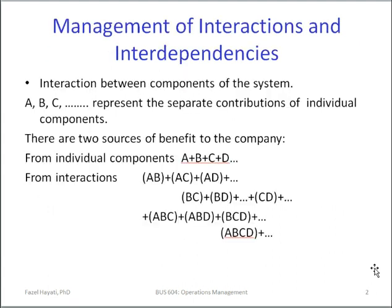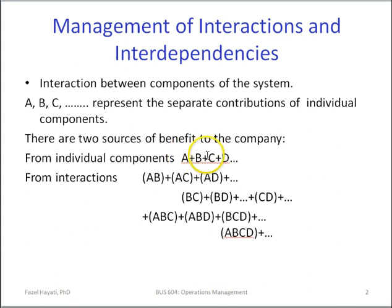Let's look at some of the features of interaction and interdependencies and how they must be managed. Let's assume an organization or a system has many parts: A, B, C, and so on. The contributions from individual components is A plus B plus C plus D and so on. The contributions from interactions: when component A interacts with component B, we have an A-B interaction; A and C, we have an A-C interaction; A and D, we have an A-D interaction, and so on. These are called two-way interactions.